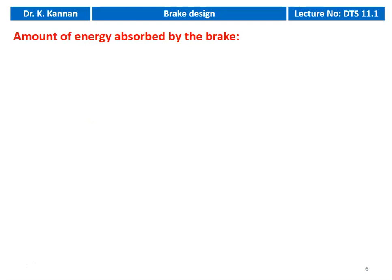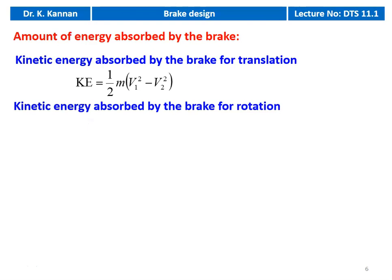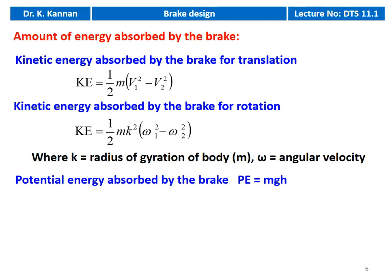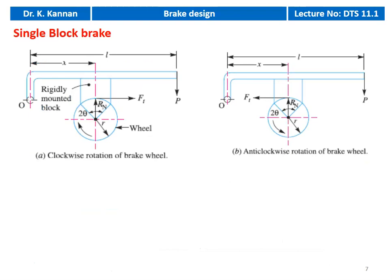The amount of energy absorbed by the brake is calculated as follows. Kinetic energy for translation: KE = ½M(V1² − V2²). Kinetic energy for rotation: KE = ½Mk²(ω1² − ω2²), where k is the radius of gyration and ω is angular velocity. Potential energy absorbed: PE = MGH. The braking torque MT is given by the total energy absorbed by the brake divided by the angle through which the brake drum rotated during the braking period in radians.